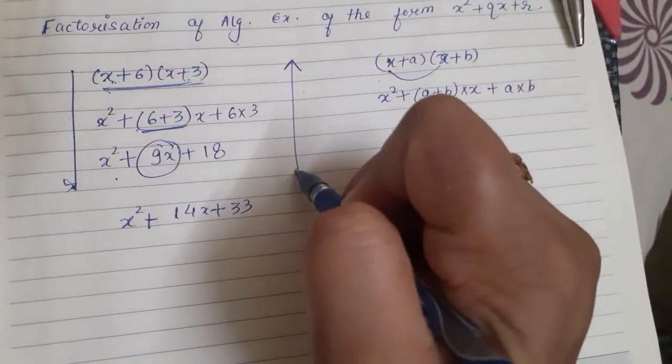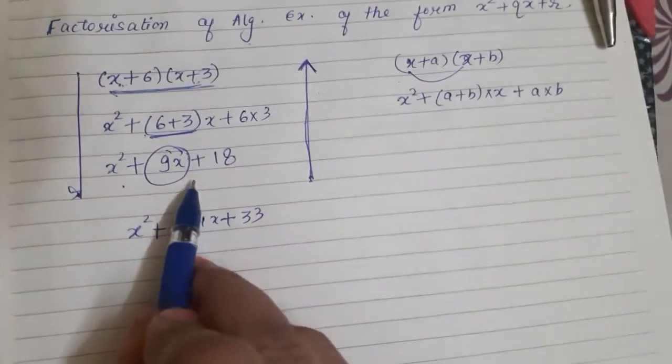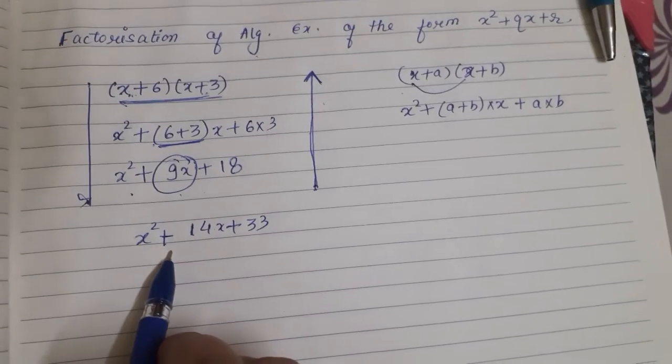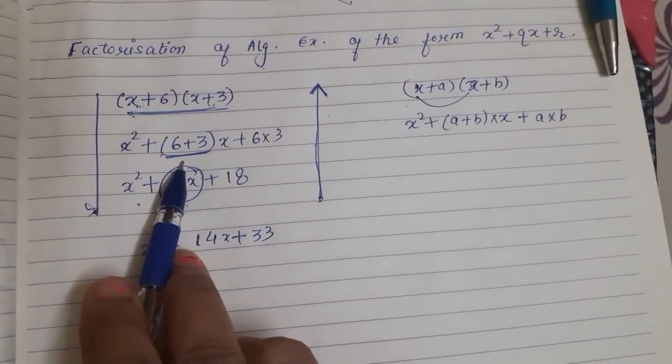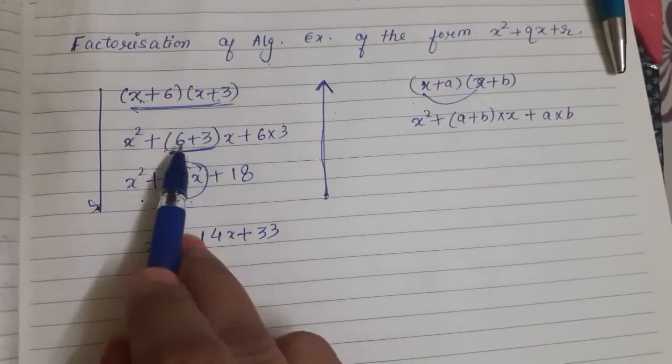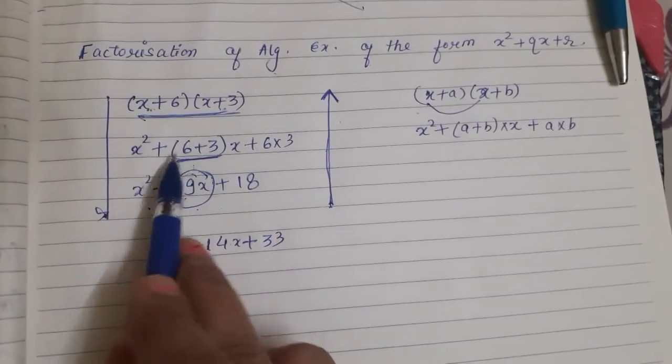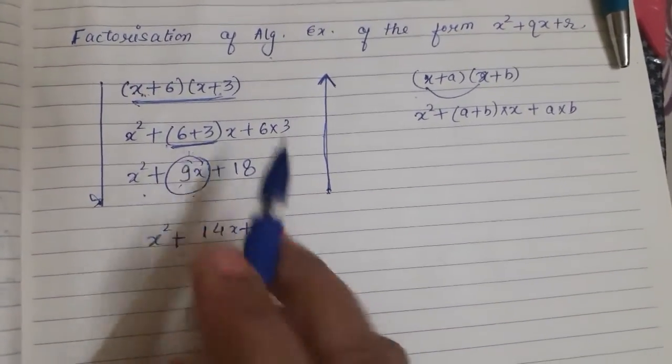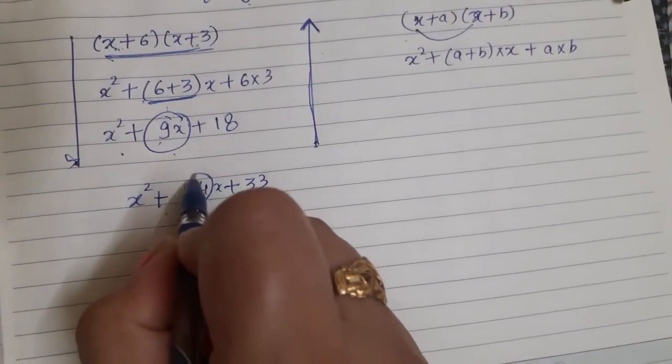Means we are going from last to first. So, last step was the expression. Now, what was the second last step? We broke the midterm in the form of addition or subtraction of something. So, what is the midterm here? It is 14.